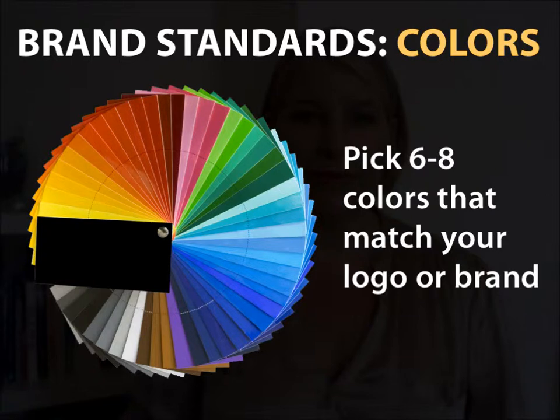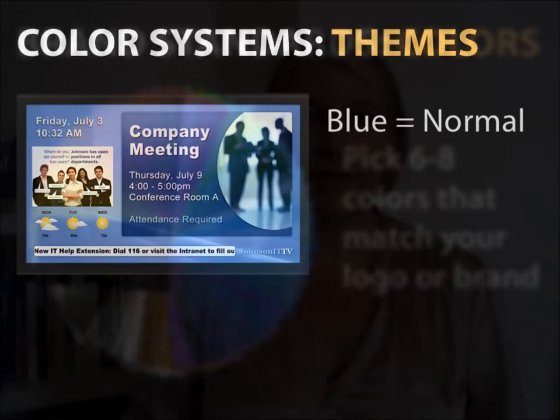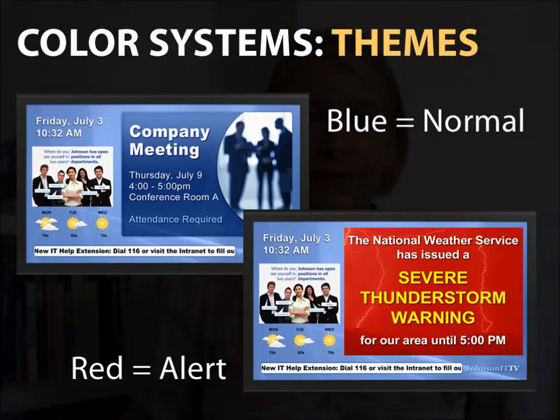In addition to brand standardized colors, you can also use color systems within your overall themes. For example, if your logo is blue and green, you could standardize to have blue backgrounds for general information, green for important announcements, and red for security and alerts. Color cues will help your audience to easily recognize the messages they're interested in, and over time you can train viewers to look for colors related to specific types of information. This is especially important when it comes to alerts.